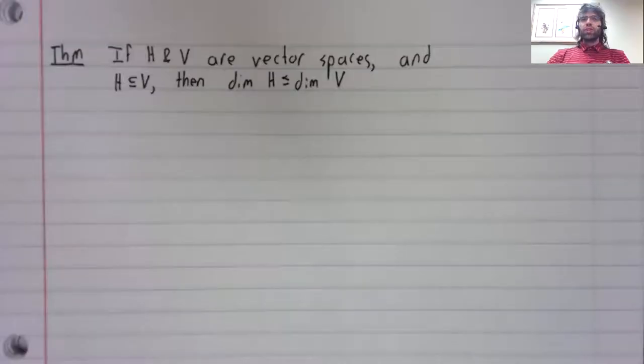In this video, we're going to state some theorems involving dimension and subspaces. Our first theorem is that if H and V are vector spaces and H is a subspace of V, then the dimension of H is less than or equal to the dimension of V. I'm not going to give a formal proof of this theorem, but I'd like you to understand it intuitively.